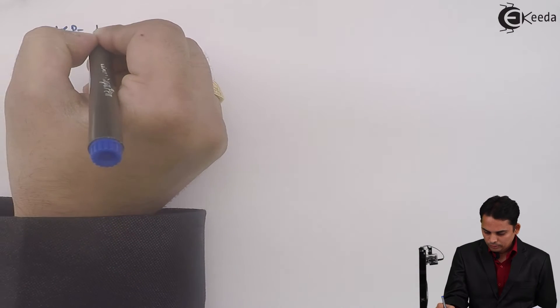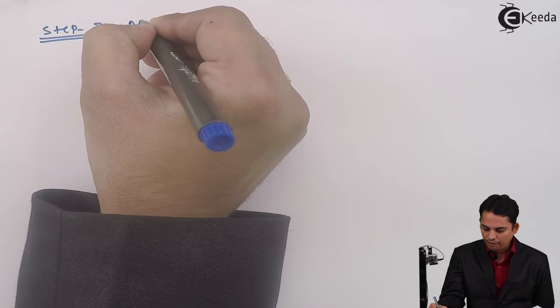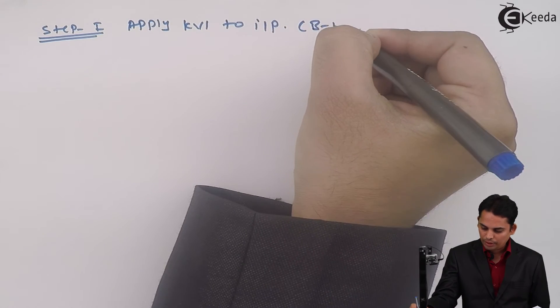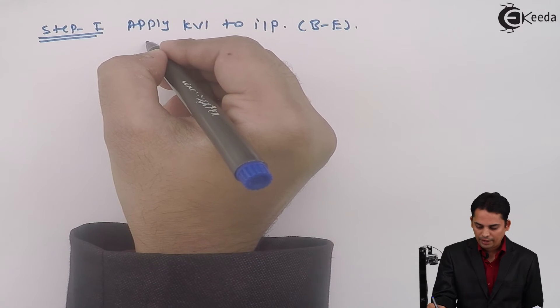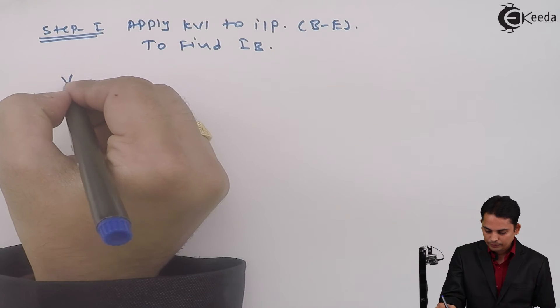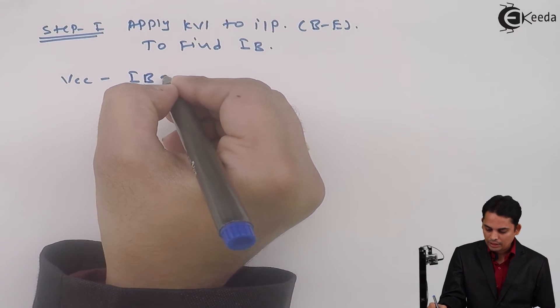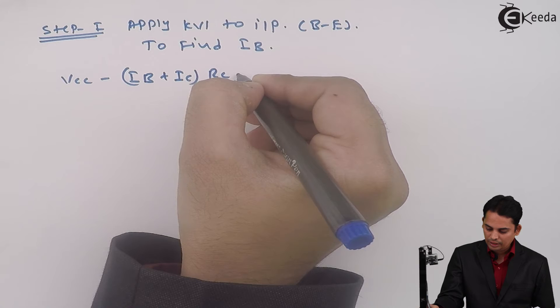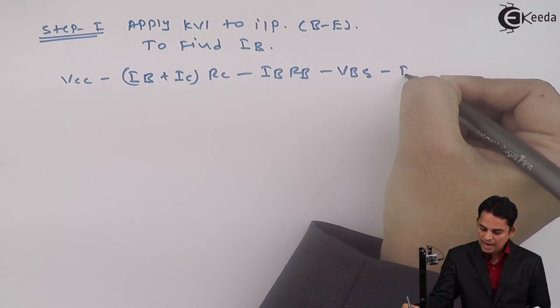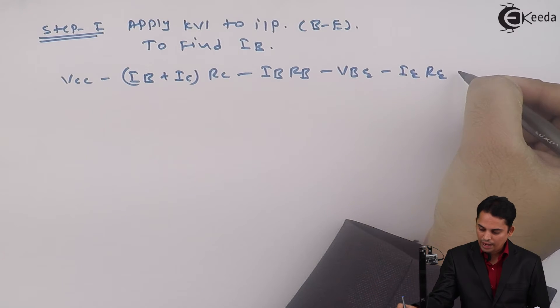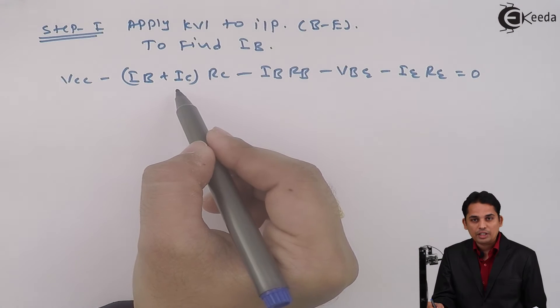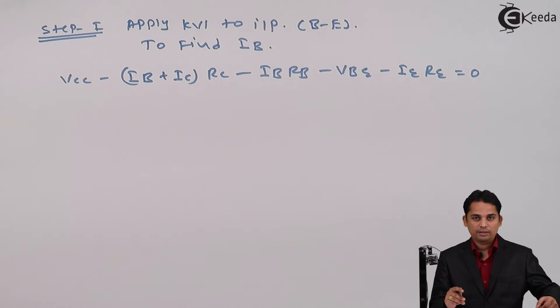Step 1 is to find or apply KVL to input, that is base to emitter. In this, we will find out base current IB. The equation will become VCC minus (IB + IC) into RC minus IB into RB minus VBE minus IE into RE is equal to 0. Now, your question in mind is how we have got IB plus IC, how we have got IE. Let's see that in the circuit diagram.